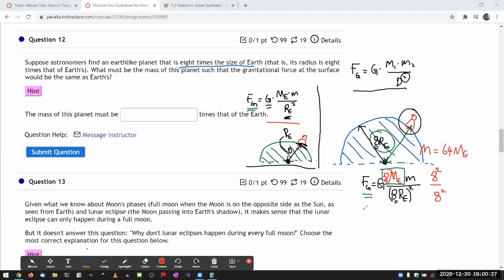If this planet has mass that's 64 times the mass of the Earth, then you can see in this expression here that how much more massive the planet is will balance out perfectly how much larger the planet is, eight times the size of the Earth. So the mass of the planet must be eight times eight, 64 times that of the Earth.